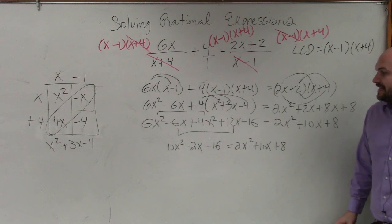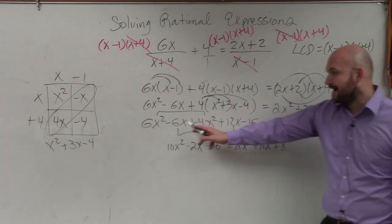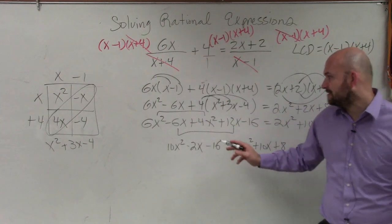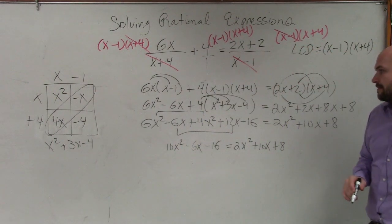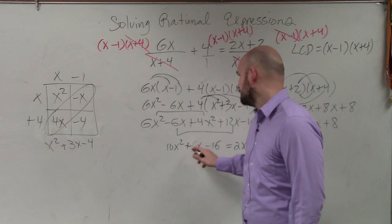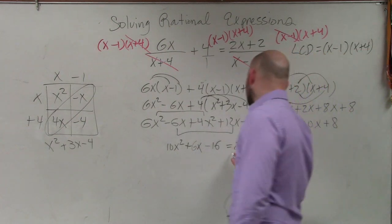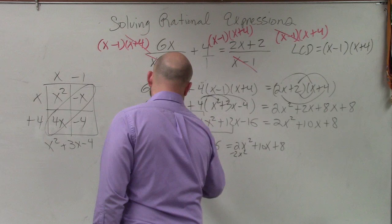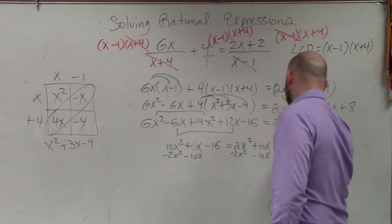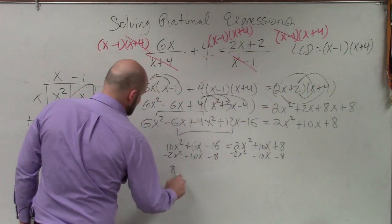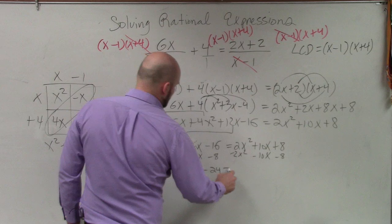This becomes a negative 2x minus 16 equals 2x squared plus 10x plus 8. Now, the important thing, ladies and gentlemen, is to get everything to the same side. I combined the terms. Oh, it is 6x. Thank you. It can get kind of confusing with dealing with all the numbers here. So now, I'm just going to get everything to the same side. So therefore, I have 8x squared minus 4x minus 24 equals 0.